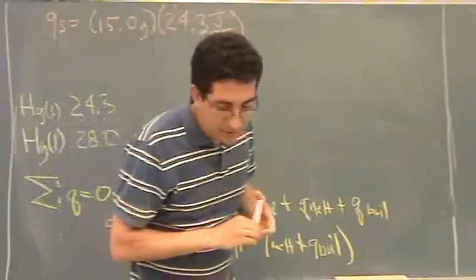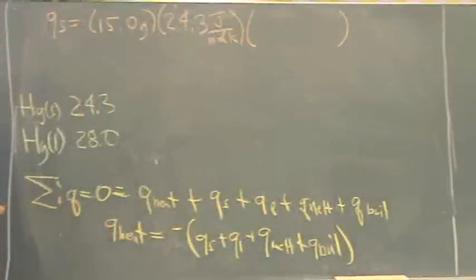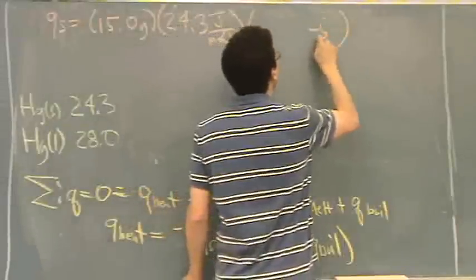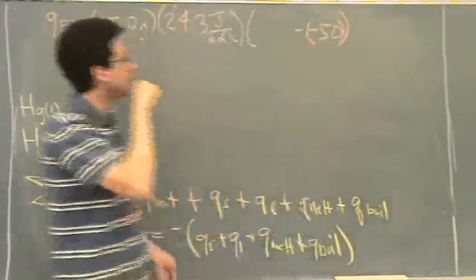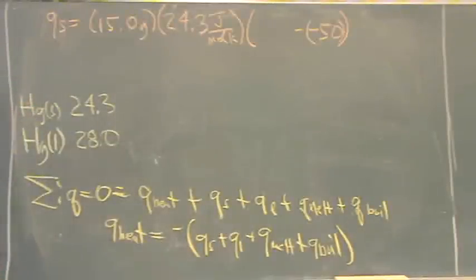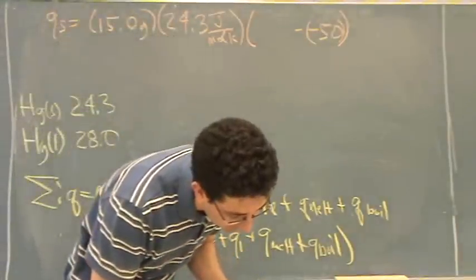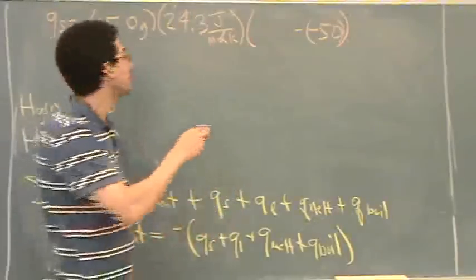And then there's a temperature change. So the T initial is minus 50. The T final, that is the solid warms up to the melting point. The T final is the minus 38. I had it written down earlier. 38.87. Is it 38.87? Okay.